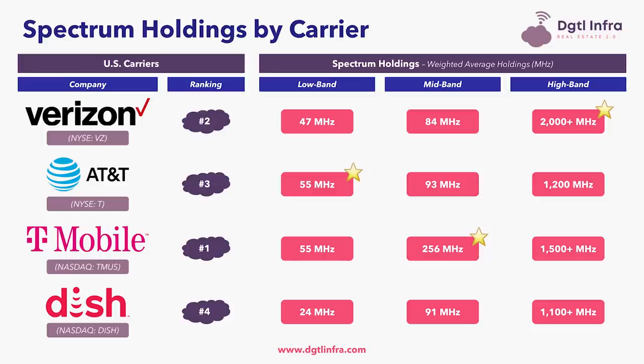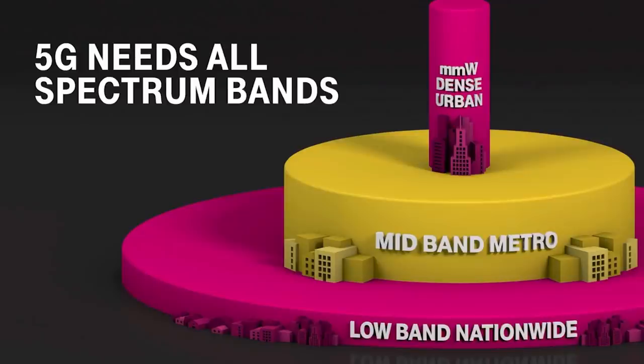Moving to T-Mobile: they have the strongest spectrum holdings overall compared to all U.S. carriers. T-Mobile has the second highest amount of low-band spectrum — basically the same as AT&T — and is far and away the leader in mid-band spectrum with 256 MHz of spectrum depth, which is approximately three times the holdings of both Verizon and AT&T. T-Mobile also has the second highest amount of high-band spectrum. Overall, T-Mobile has a well-rounded spectrum portfolio, fitting the layer cake model we discussed earlier.